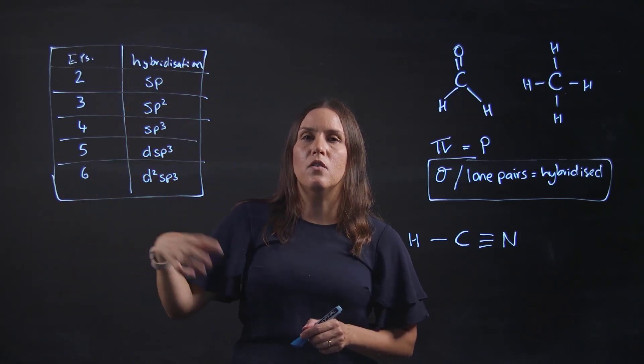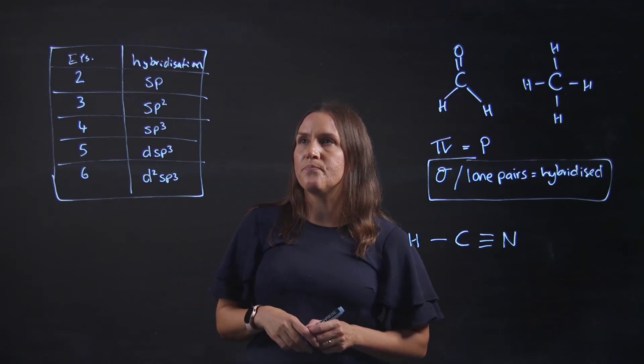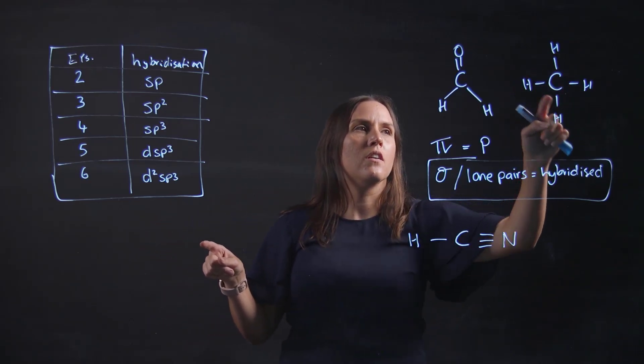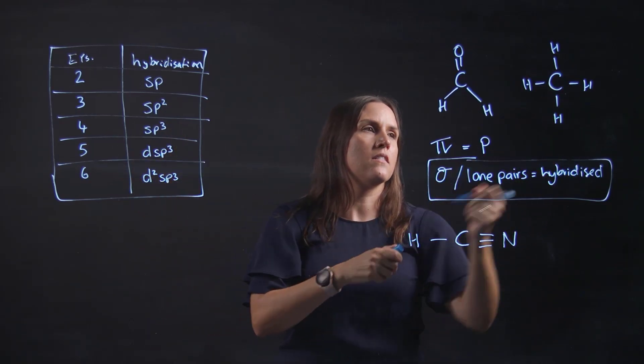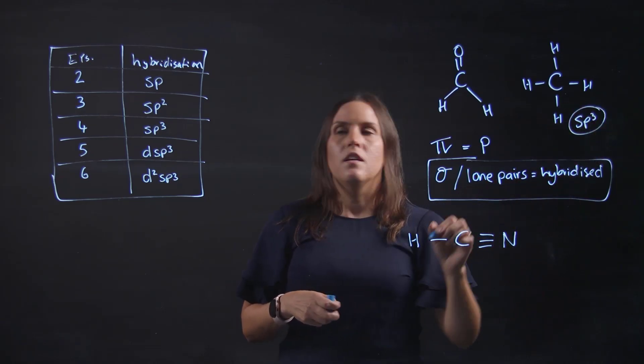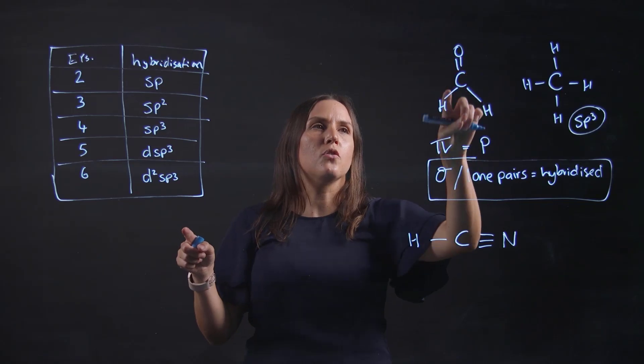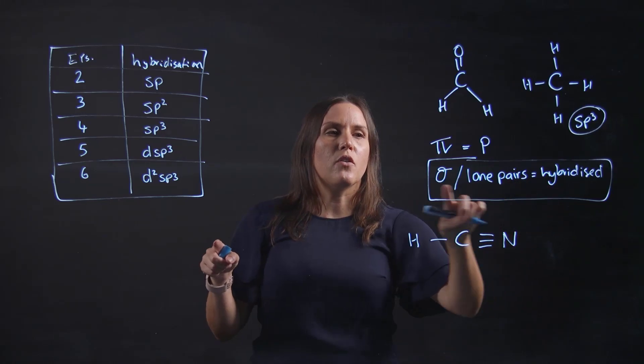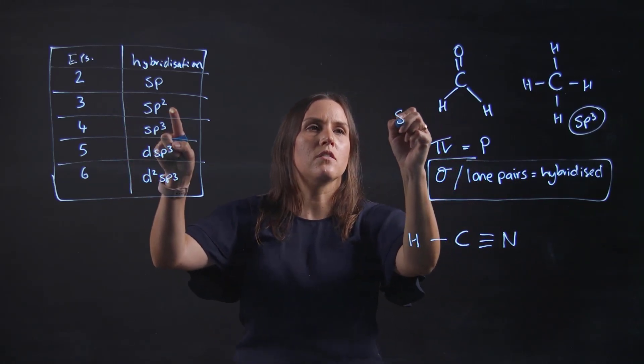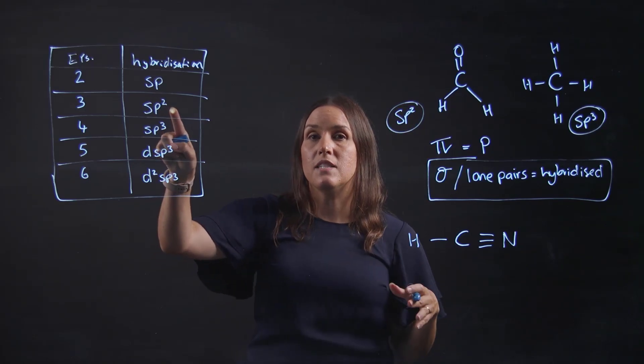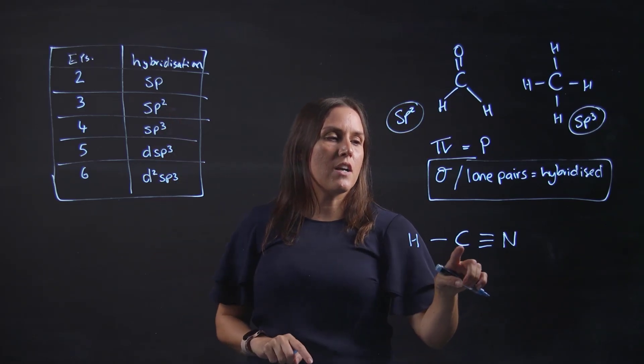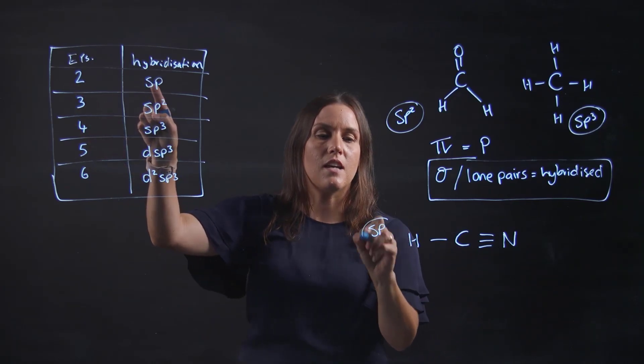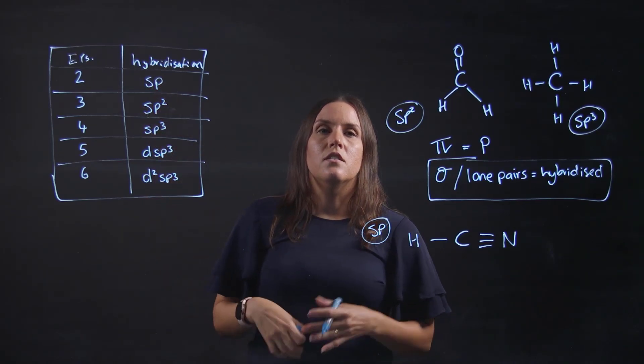Looking at this one, if I've got four it's going to be sp³. Now looking at this one here I've got one, two, three sigma bonds. I don't count the second one because that's a pi bond. So I've got three effective pairs, that's sp². See how they're coming out the same as the examples we just drew out. Looking here I've got carbon and I've got two single bonds, so it's sp, again coming out the same as we talked about before.